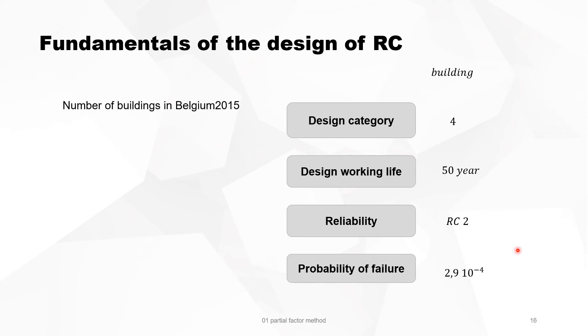This means that if you take the total number of buildings in Belgium in 2015, something like 3.7 million buildings, 1071 buildings will fail during the working life of 50 years. Or yearly, 4 buildings will fail in Belgium, just because of the design method that you are using.